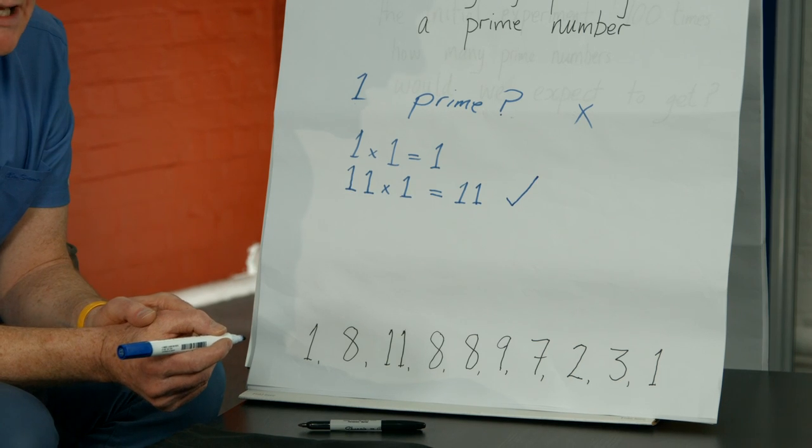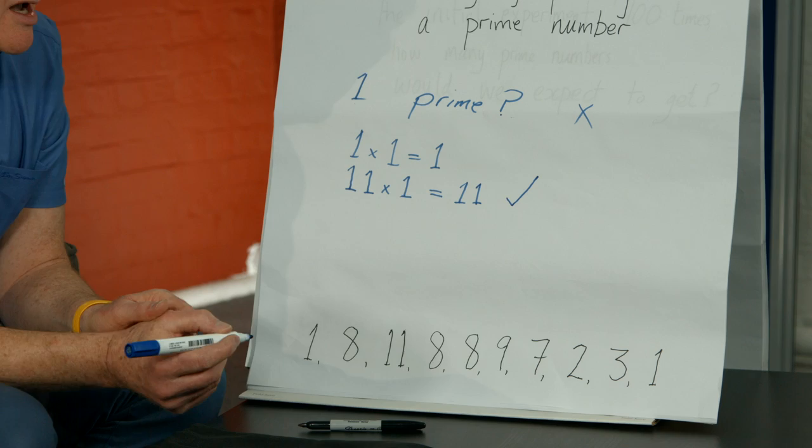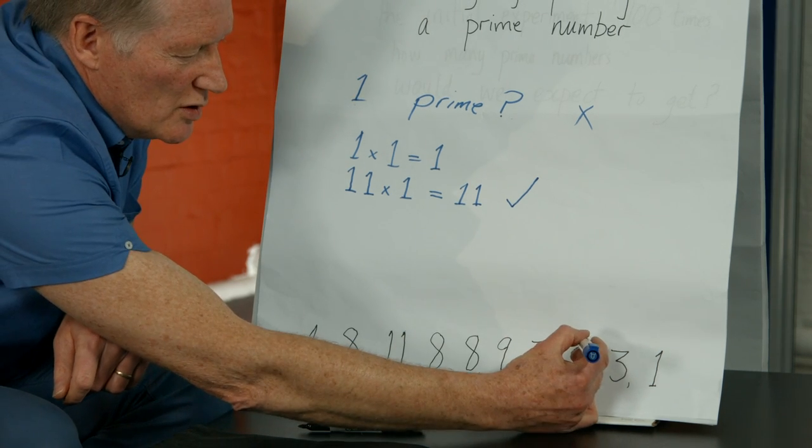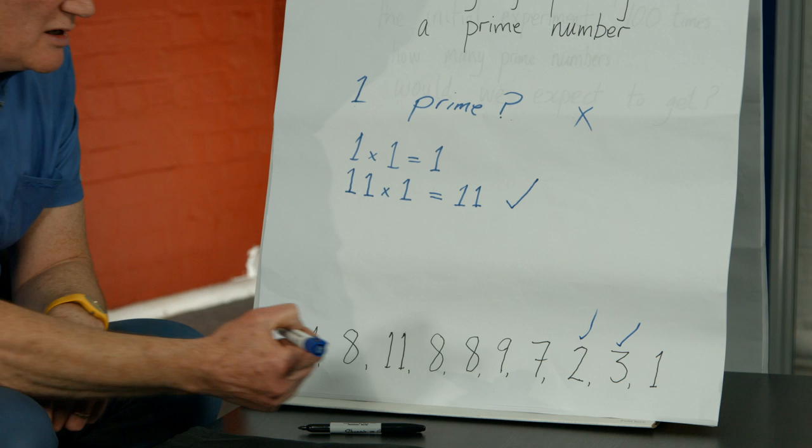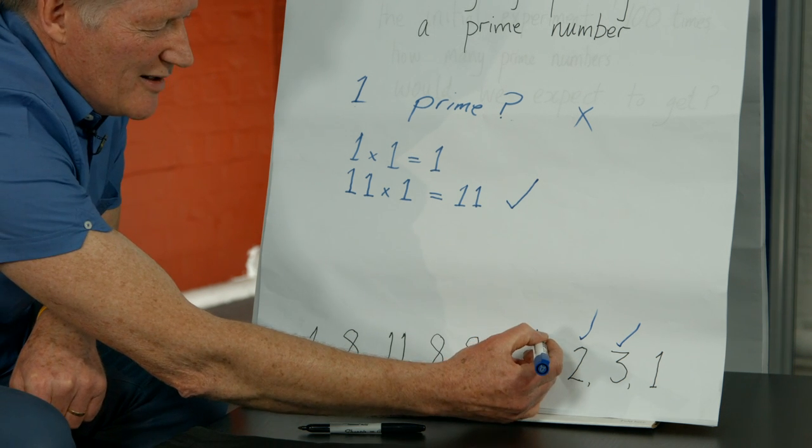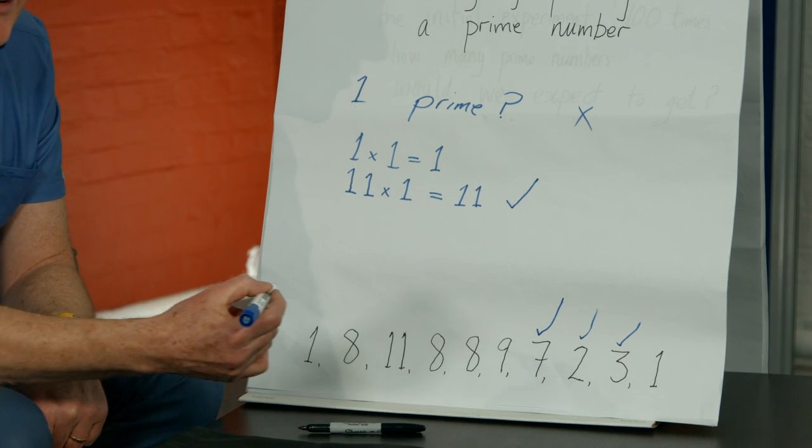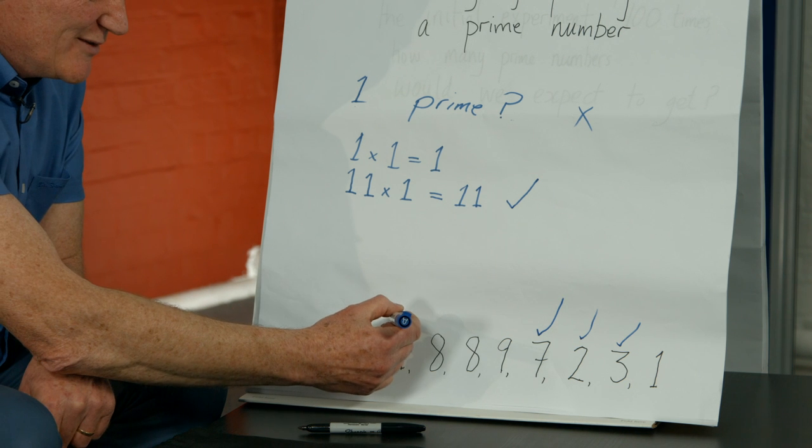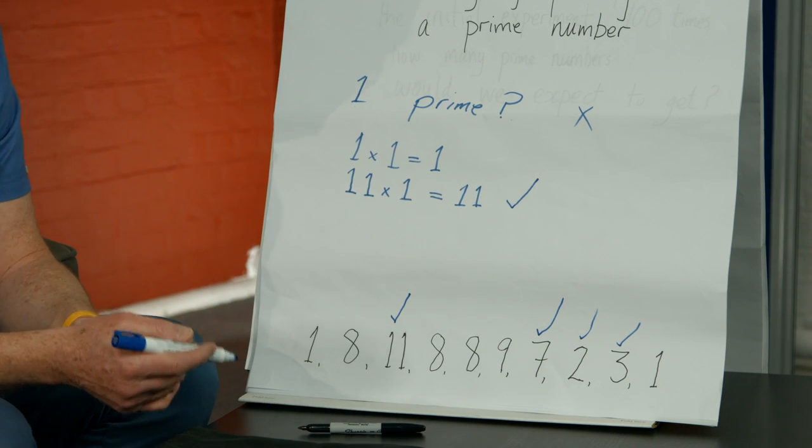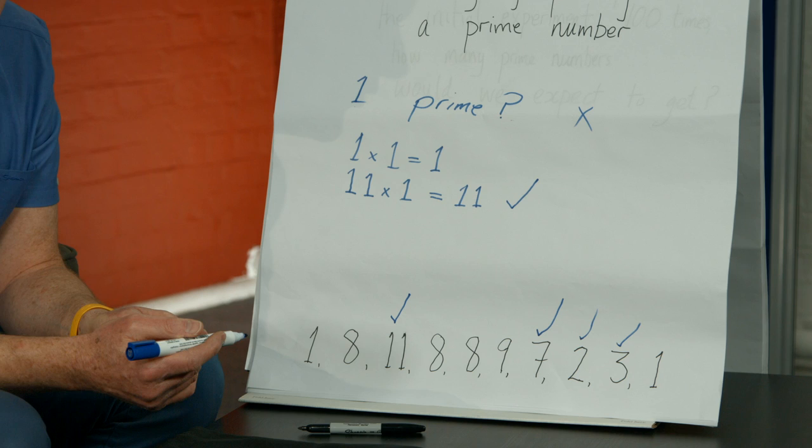Now, there are other numbers in the list that are prime numbers. And that's number 2, number 3, and number 7. So that makes three more prime numbers in addition to the 11. So all together, we've got four prime numbers.